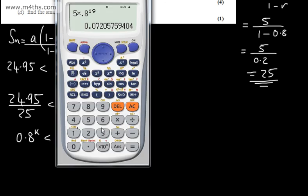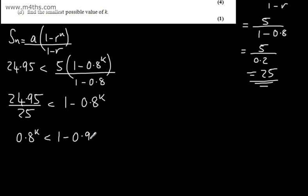If we find that quantity, 24.95 divided by 25 gives us 0.998. So 1 minus 0.998 means we can say that 0.8 to the power of k is less than 0.002.